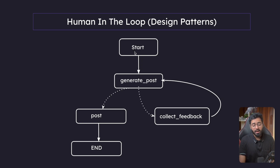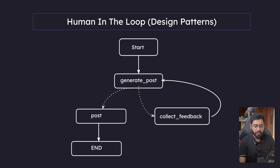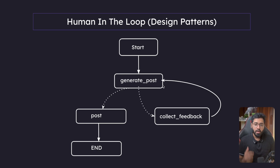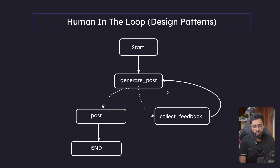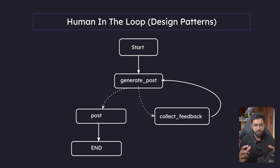We have the start node where we provide the topic — something like 'create a LinkedIn post on this.' When it hits the generate post node, the LLM call is made and a post is generated. As soon as the post is generated, we interrupt the flow of the graph right there. We then show the user the draft and ask: is it good or not?